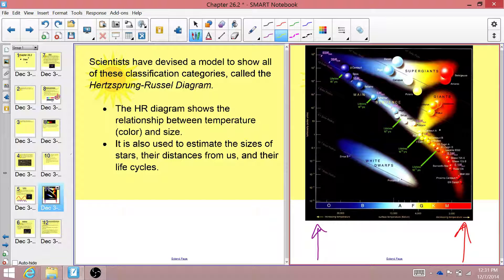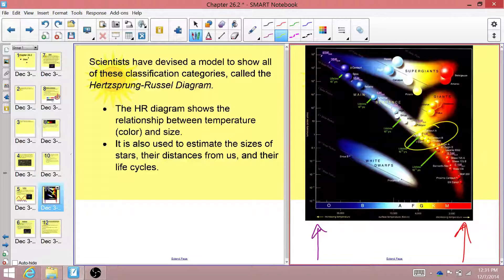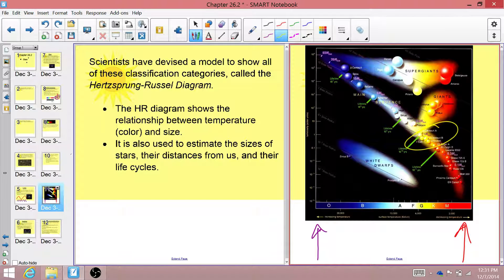Our sun is found somewhere around here. It's on the main sequence, it's a nice yellowy color, and it turns out being here is representative of being in the middle of a star's life. And we're going to talk about stellar evolution and the life cycle of stars in the next chapter.